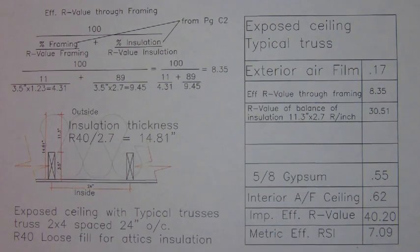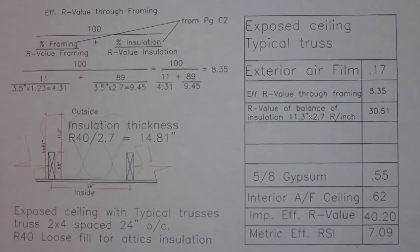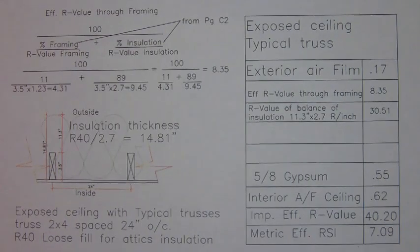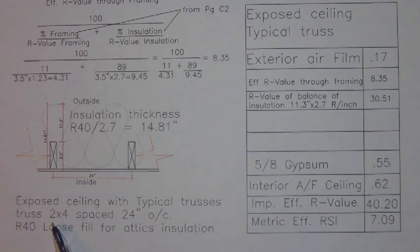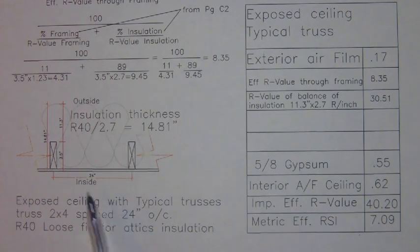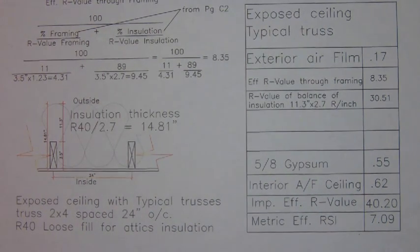Let's have a look at our proposed exposed ceiling construction. We're looking at a ceiling comprising typical trusses, and the cords of the trusses are made with 2x4 and the trusses are spaced at 24 inches on center. In this case we need R40 insulation and we're going to use loose fill for attics.